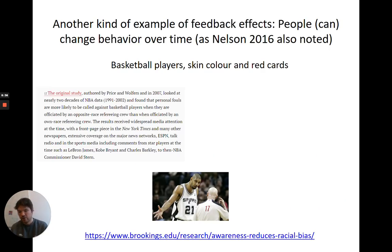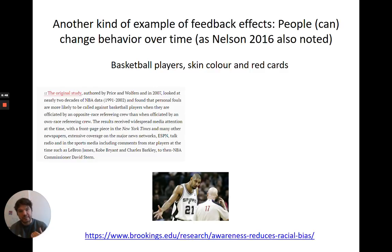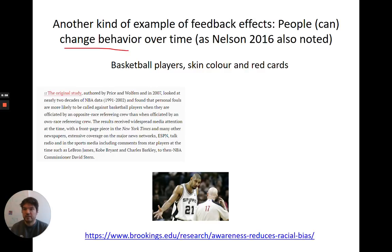There is actually an additional layer to all of this, which I alluded to in the first lecture: people are different than studying atoms or animals. Let me illustrate with a concrete example. This is about how people can change behavior. Another study of skin color and red cards — this one on basketball players — was done by economists Price and Wolfers.